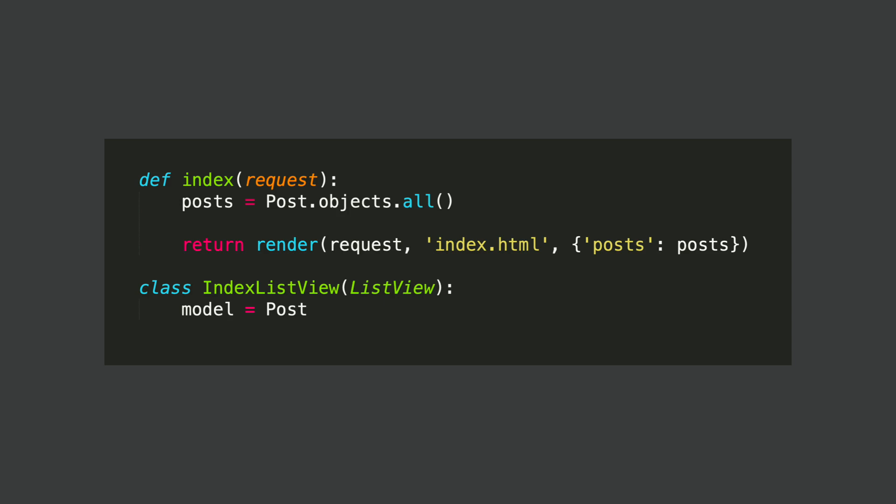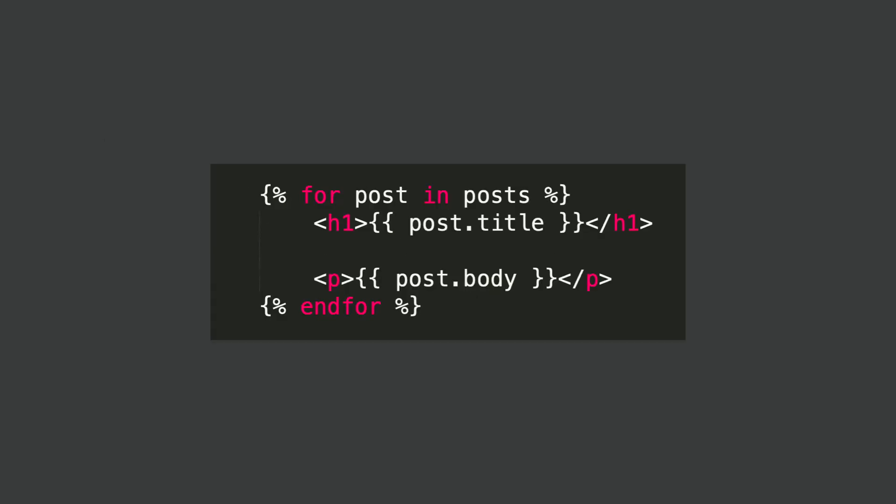The view below is a class-based view. This does exactly the same as the one above. It takes the model Post, and since we pass in ListView, we want to get all of the posts. Then this will automatically look for a file called post_list.html. So a lot of magic happens here and Django does a lot for us.